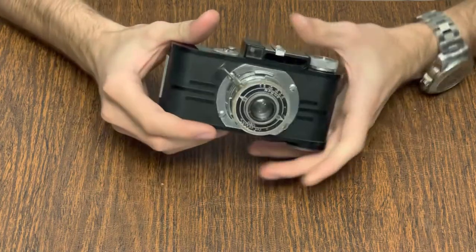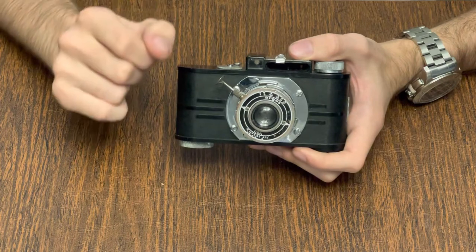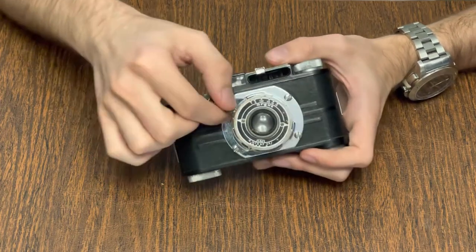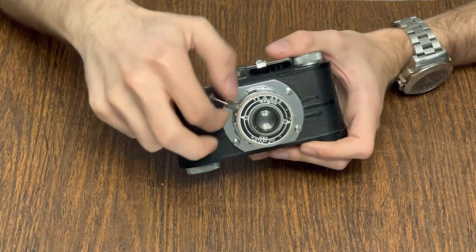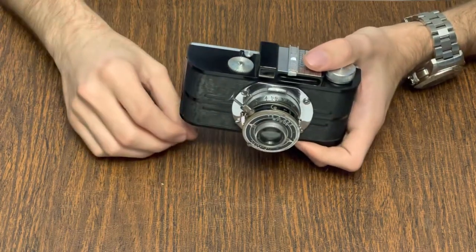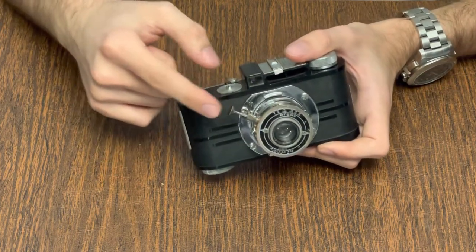What's interesting about the Argus A2F is that there is no shutter release on the shutter can itself. A plunger is screwed into the cable release socket on the side of the shutter can and depressed when a picture is to be made. This one is unfortunately not an original. It is one that I made in my home machine shop.